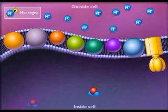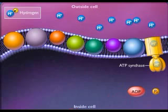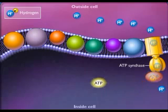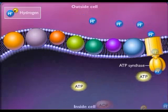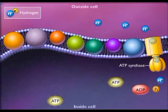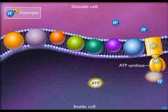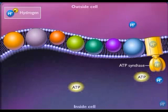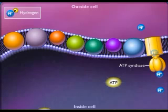The enzyme ATP synthase utilizes the energy of the proton motive force to synthesize ATP. This enzyme allows protons to pass back into the cell and couples the energy released in this process to the phosphorylation of ADP to form ATP.